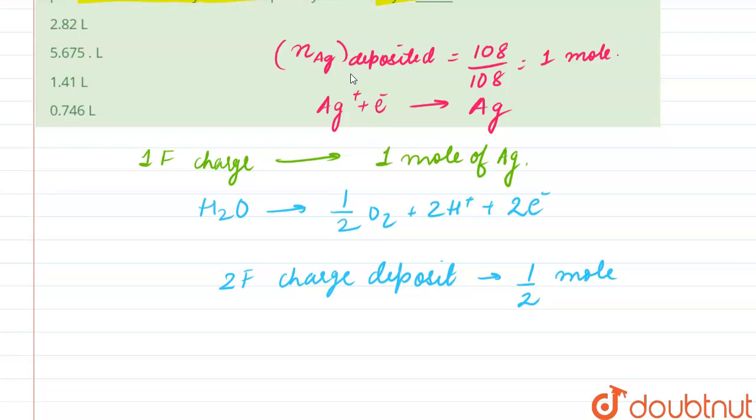So we can say that 1F charge deposits 1 by 4 mole, alright.